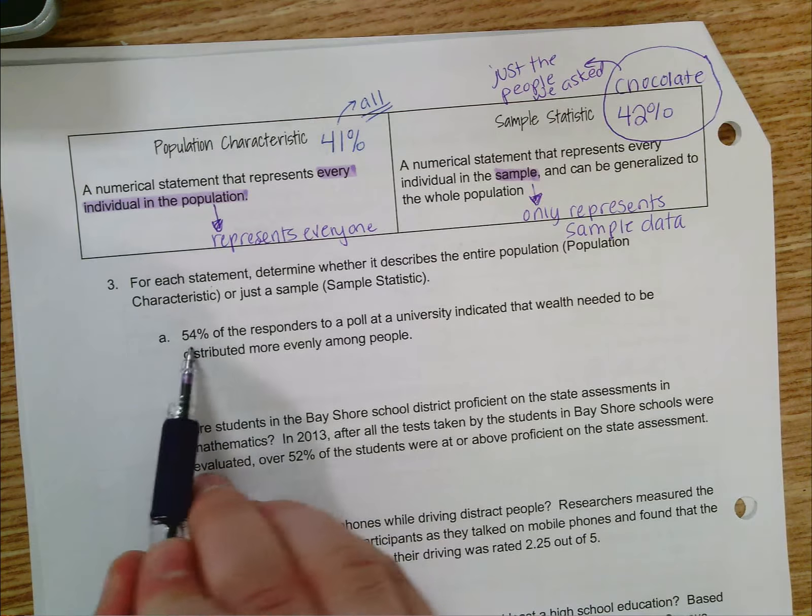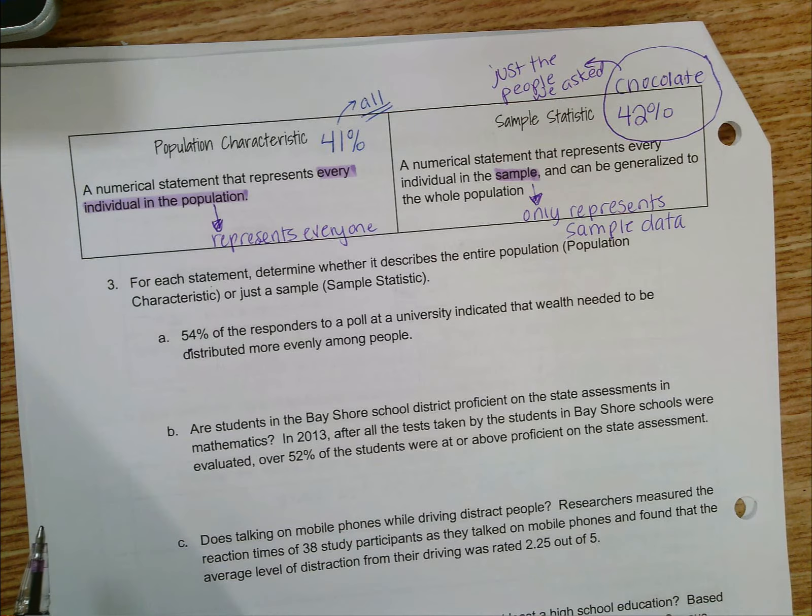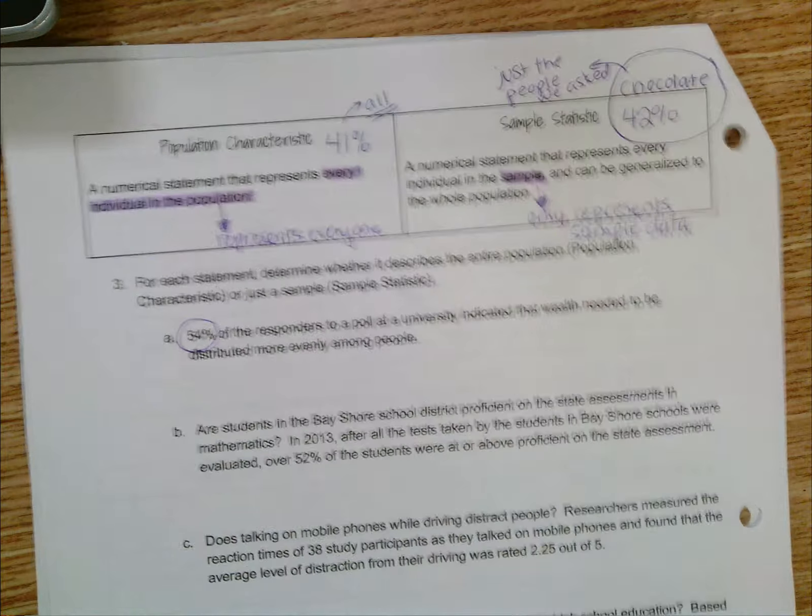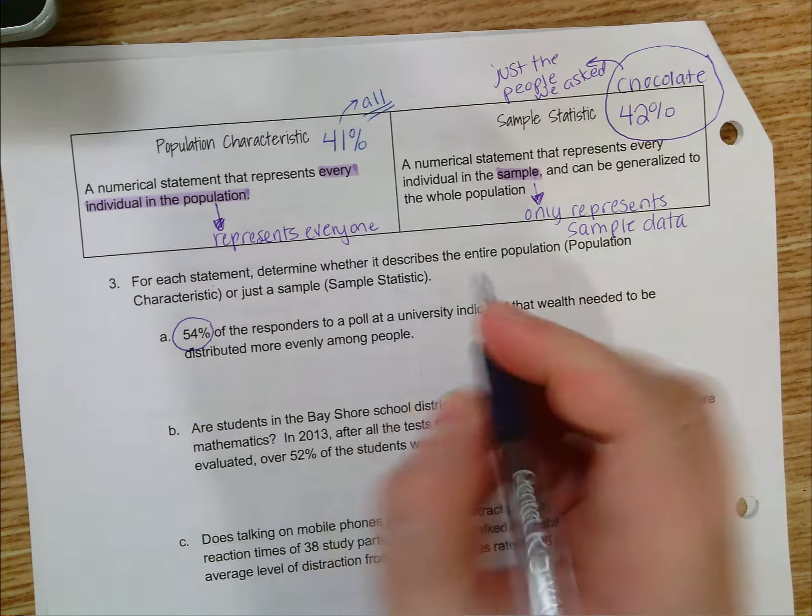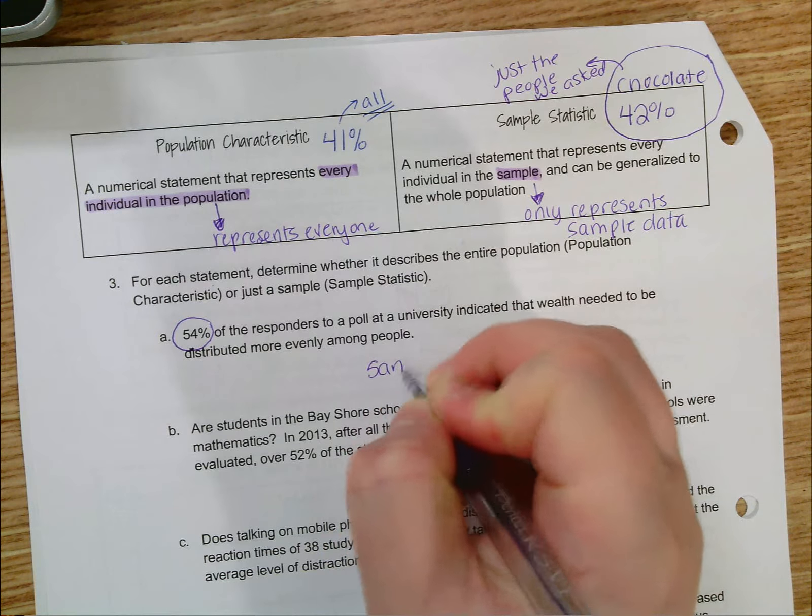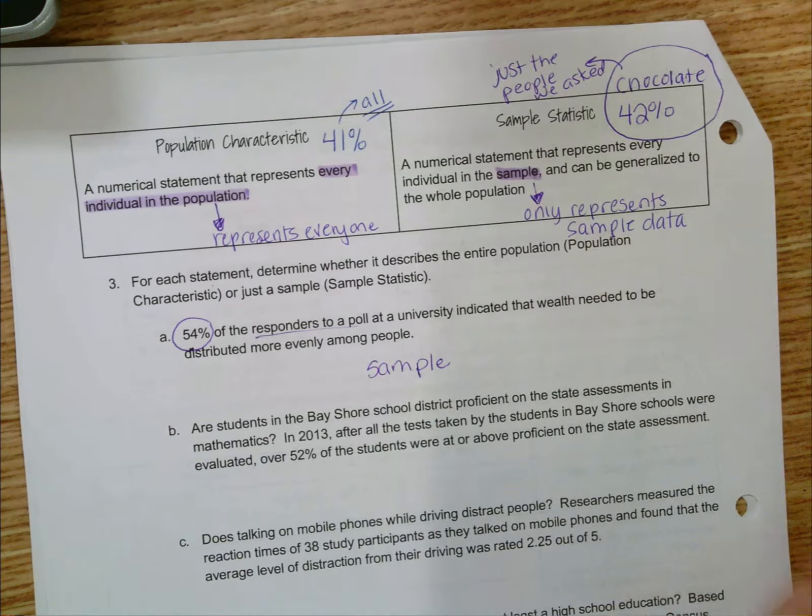54% of the respondents to a poll at a university indicated that wealth needed to be distributed more evenly among people. Even though this might represent the opinions of everyone, only 54% of the people who responded indicated that they agreed with this. So I would say that this represents a sample. It doesn't represent everyone; it just represents the people who responded to a poll, so that means that